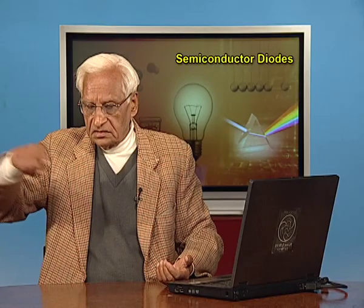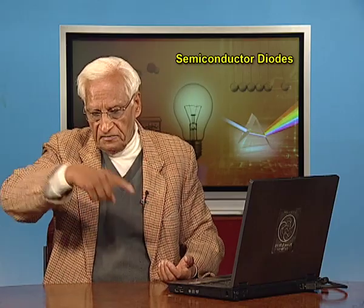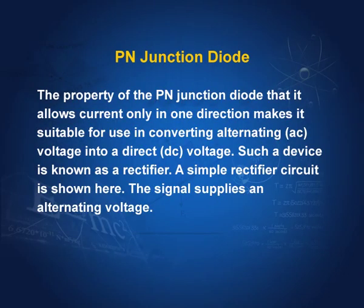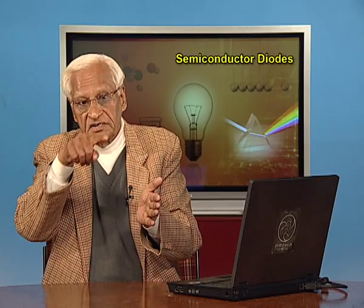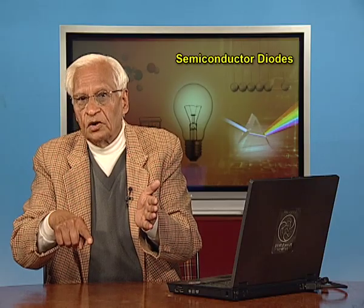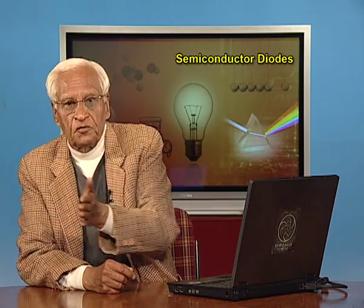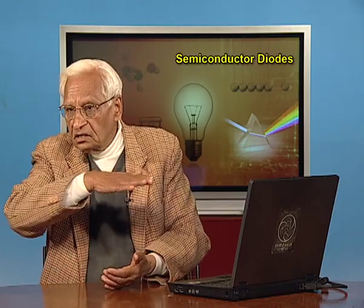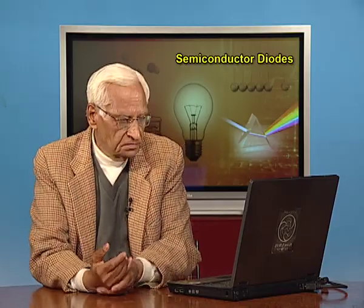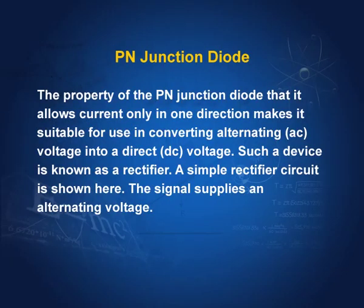In AC, there is a change in polarity every half cycle. Therefore, the P-N junction will conduct during the positive half and will not conduct during the negative half, so we have only the positive voltage. This process is called rectification and the device is called a rectifier. A simple rectifier circuit is shown in the next slide.